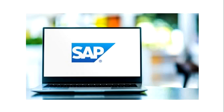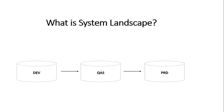Hey everyone, welcome back to the channel. Today we will discuss what is system landscape. In very simple words, the sequence of all servers layout is called a landscape. The SAP system landscape is a group of systems you have installed, and all the systems are linked to different transport routes to the main system, which is your PRD system.